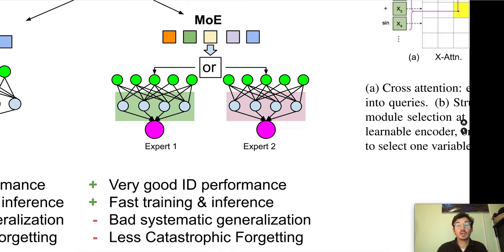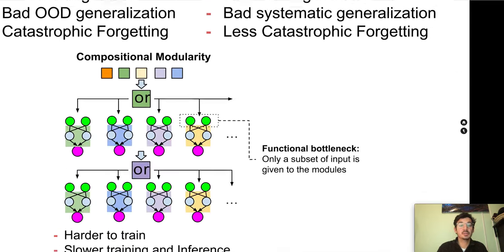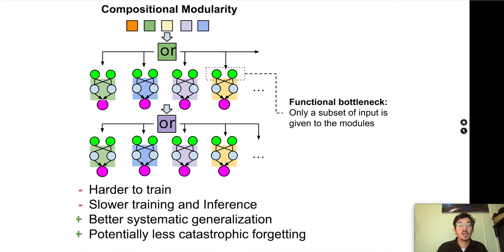In this work we concentrate on the architectural paradigm that we call compositional modularity. In compositional modularity the network is dynamically constructed for each input sample through a sequence of module selection and application steps. Here a single module is a simple non-linear MLP that receives as input either the raw input sample or the output of a previously applied module.